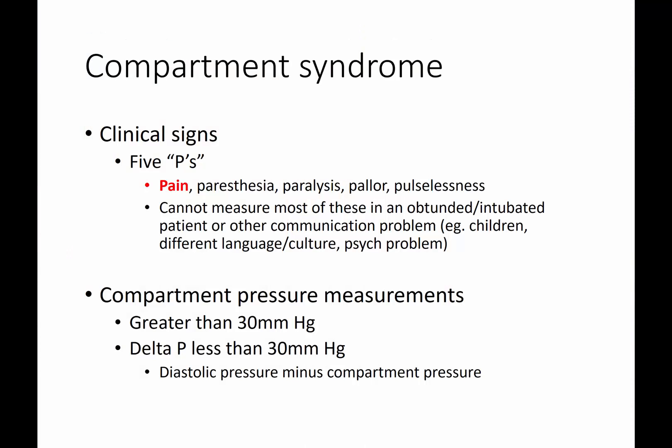A couple of things you'll hear quite a bit when talking about compartment syndrome are the so-called five P's. This really pertains more to adults; in children the clinical diagnosis can be a little bit different. The classic five P's are: pain — and I highlight that because that's really what you want to diagnose things at this stage — then it can progress to paresthesia, meaning numbness, and paralysis, meaning muscles aren't working anymore.